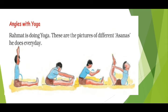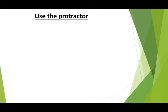Angles with yoga — Rahmat is doing yoga. These are pictures of different asanas he does every day. In his body different angles are formed: the first position shows 90 degrees, the second shows less than 90 degrees, the third shows 90 degrees and less than 90 degrees, and the fourth shows more than 90 degrees.